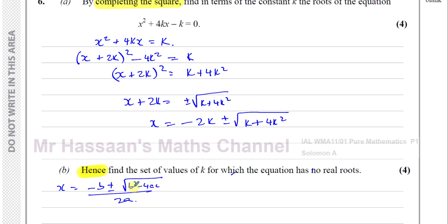That's why we use b squared minus 4ac as the discriminant. If b squared minus 4ac equals zero, we'll only have one answer — minus b over 2a — giving one solution. If this is a positive value, we'll have minus b plus the square root of b squared minus 4ac, and minus b take away the square root, giving two separate solutions. So: positive value gives two solutions, zero gives one solution, negative gives no real roots.